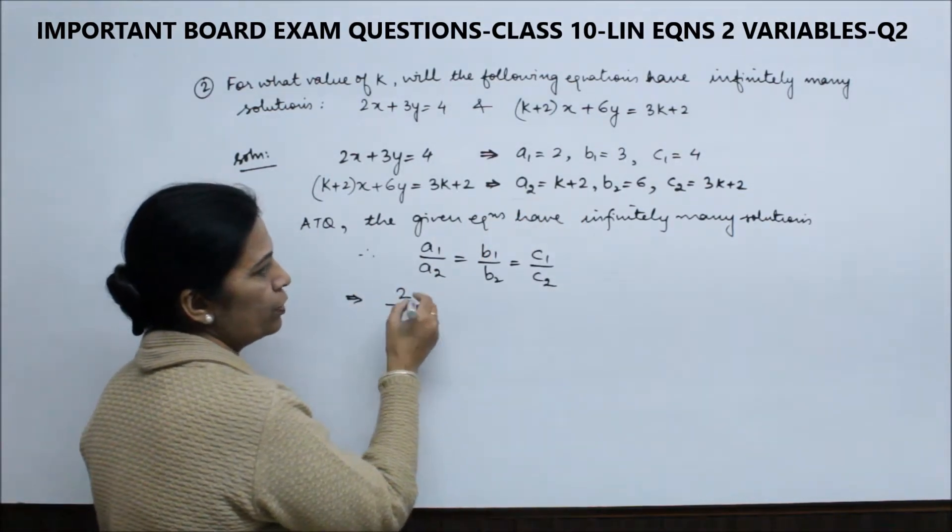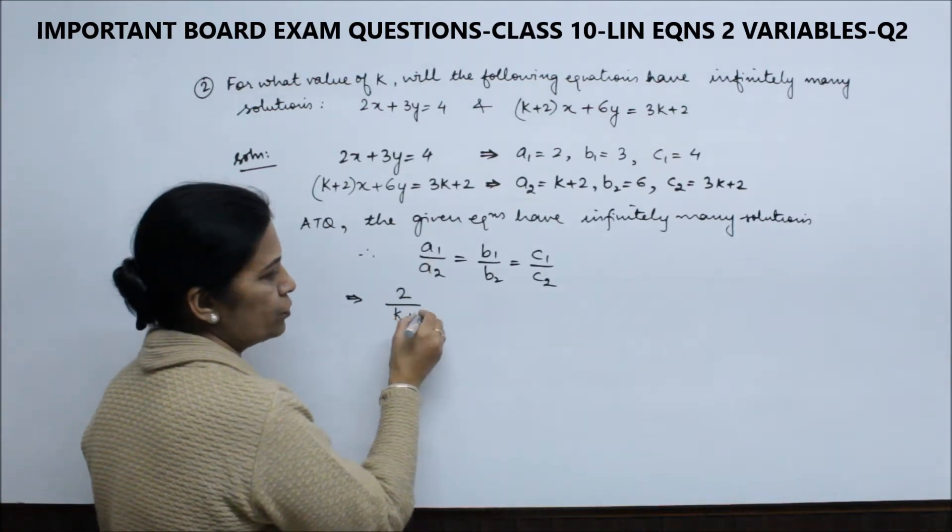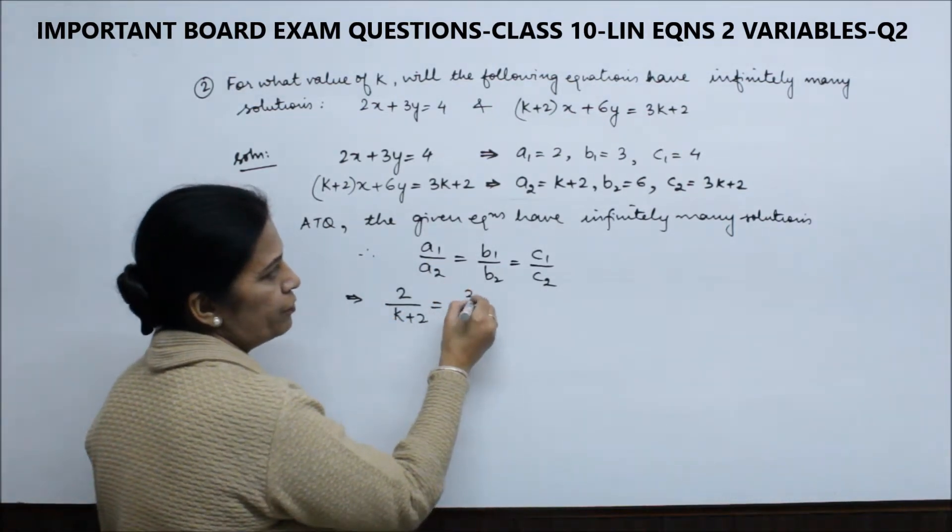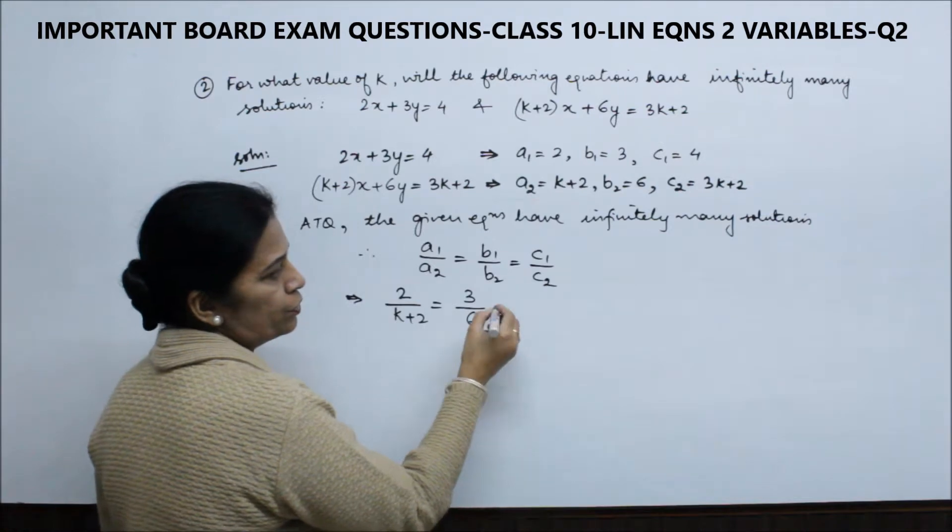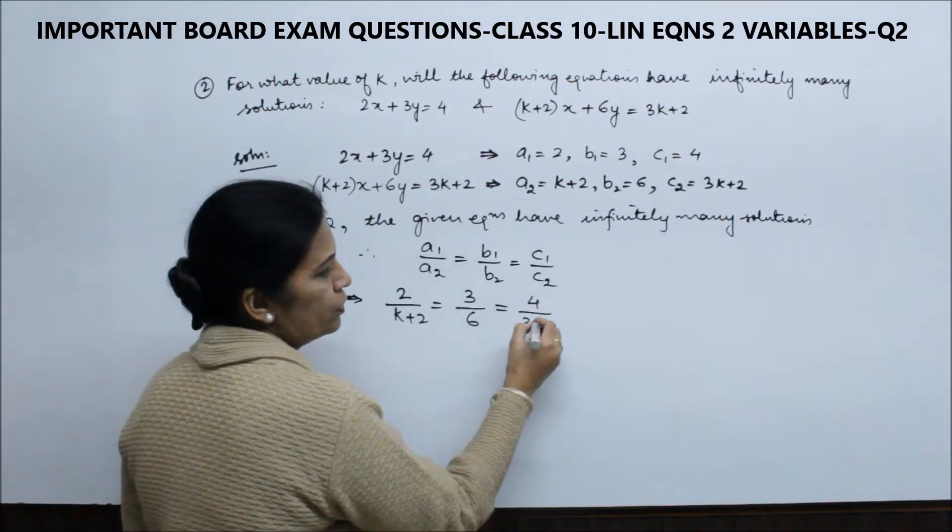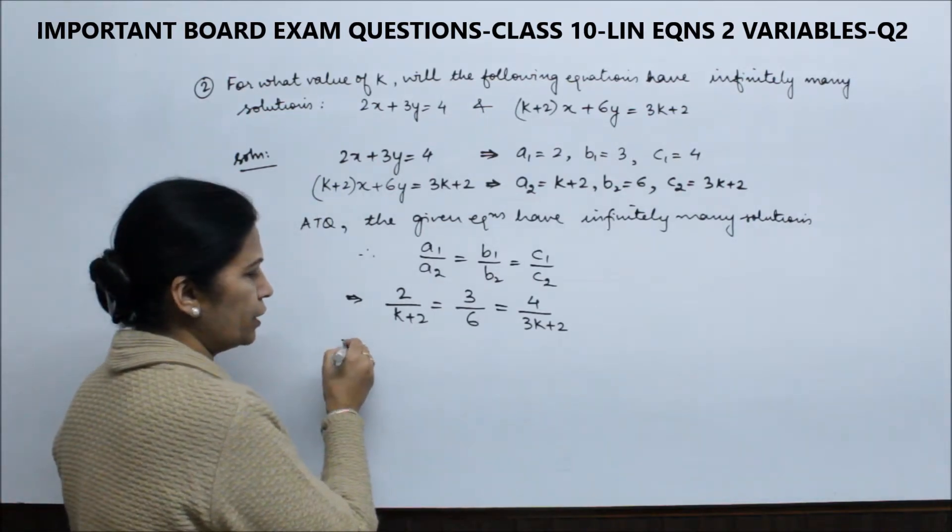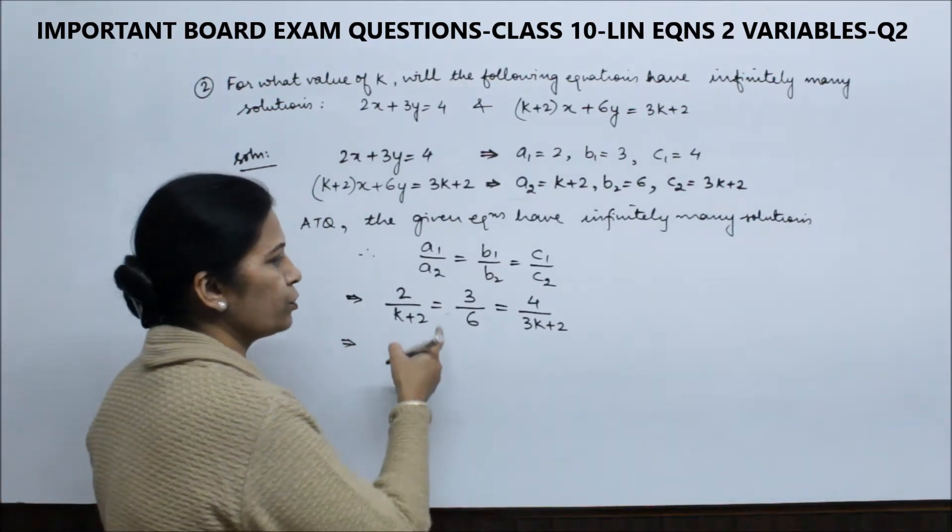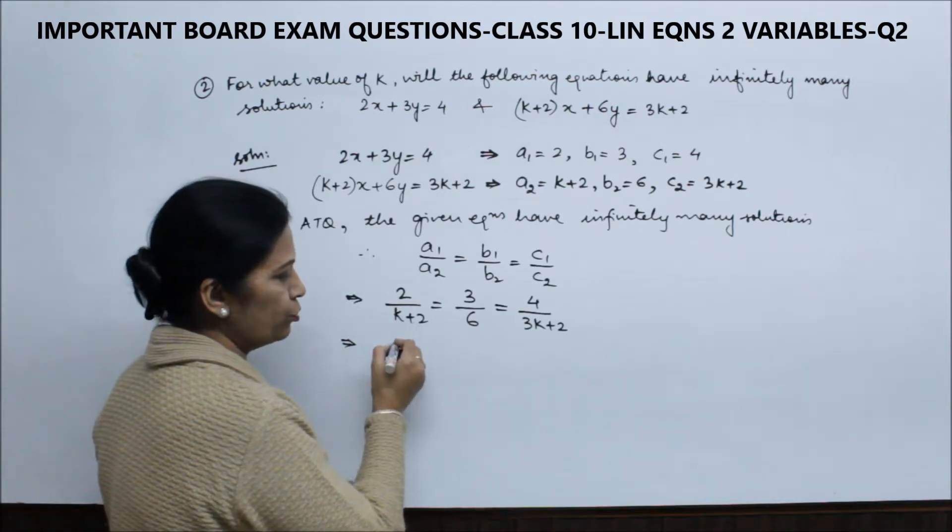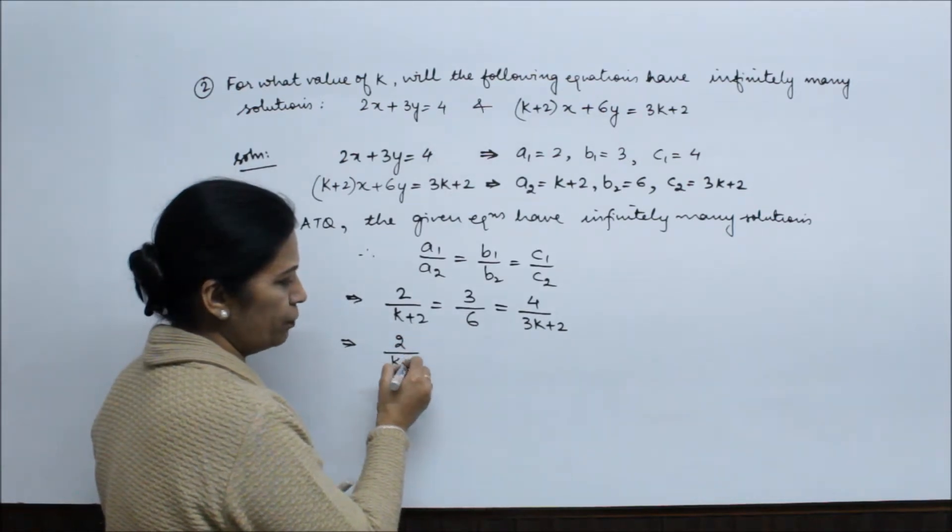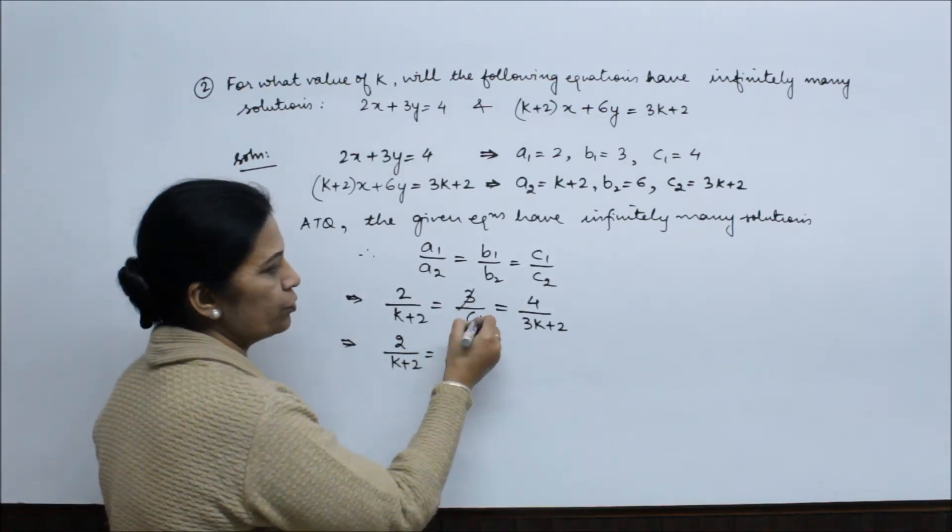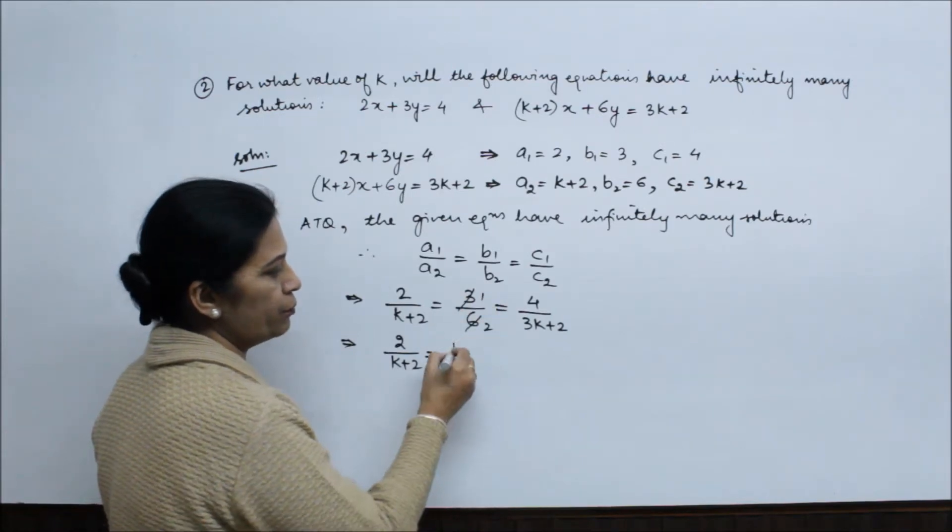So here, a1 is 2 upon a2 which is k+2, this equals b1 which is 3 upon b2 which is 6, equals c1 which is 4 upon 3k+2. Now we'll find the value of k. We'll take these two: 2/(k+2) equals 3/6...